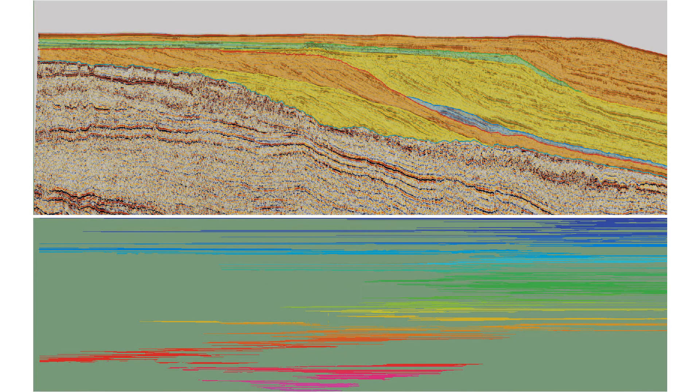Always remember, in sequence stratigraphy, rocks of two different facies can be correlated with each other because they were deposited at the same time in different environments.